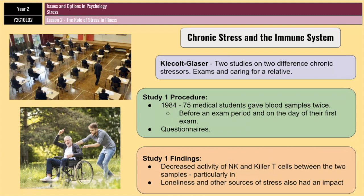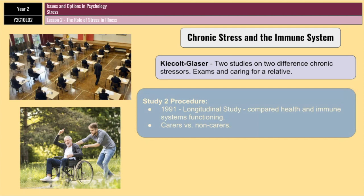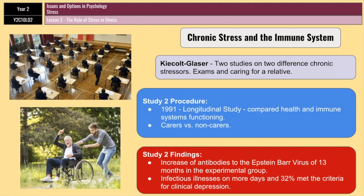The second study, Kiecolt-Glaser et al. 1991, was a longitudinal study comparing the health and immune functioning of two groups: caregivers looking after a relative with Alzheimer's disease, and a matched control group of non-caregivers. The caregivers showed an increase in antibodies to the Epstein-Barr virus (a herpes virus), whereas no such increases were found in the control group — a clear indicator of a weaker cell-based immune response. The caregivers also had infectious illnesses on significantly more days than controls and had higher levels of depression, with 32% meeting the criteria for clinical depression compared to only 6% in the control group.